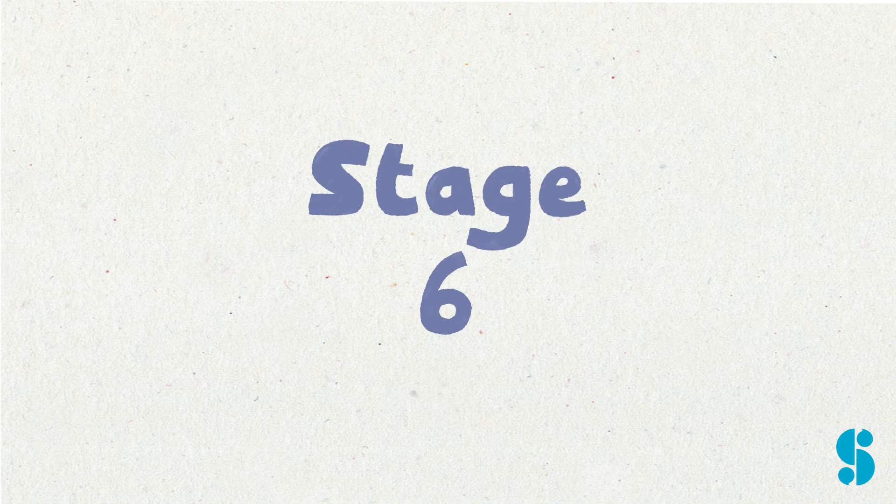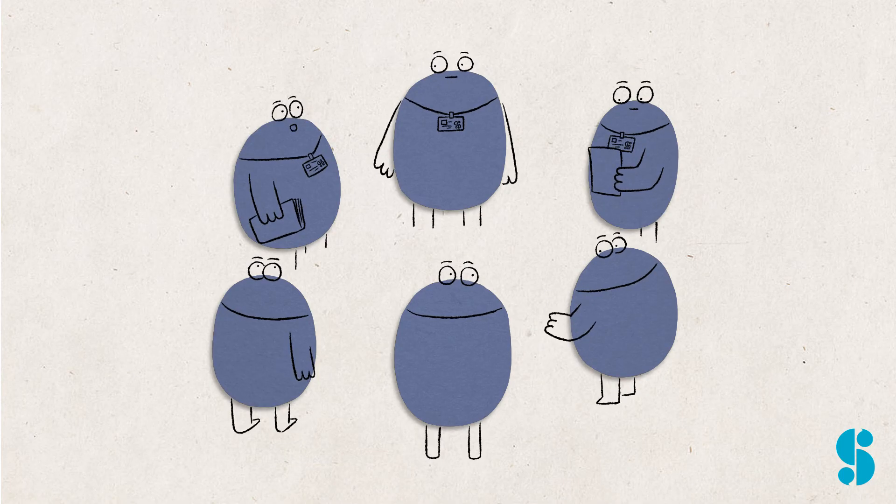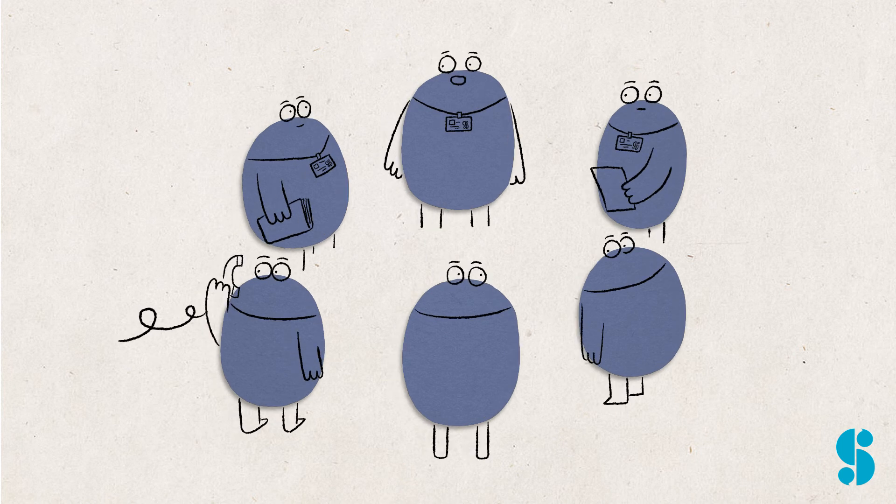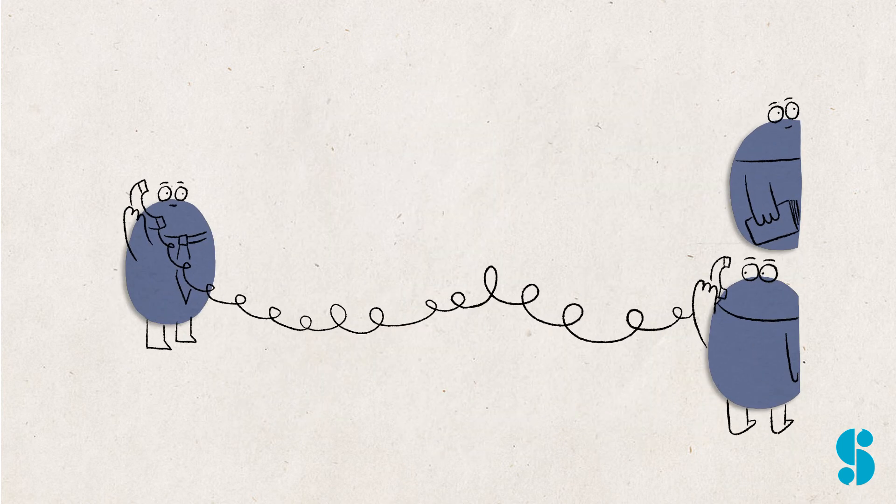Stage 6. Following the assessment visit, we will gather up feedback from all relevant staff and write a report. This will include either the offer of a place or the reasons why we do not feel it will be the right thing to do. We will share it with you and your local authority.